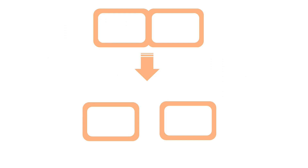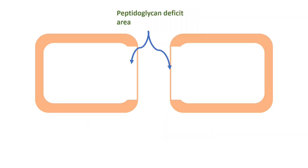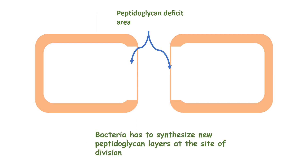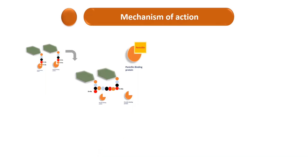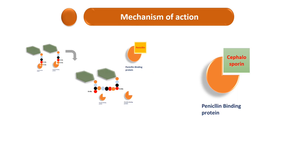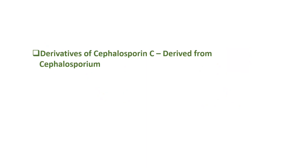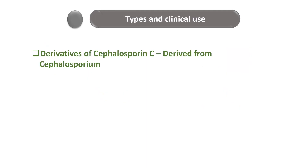During replication, a bacterium removes the peptidoglycan layer circumferentially to allow cell division by a pinching-like action, quickly placing new segments at the ends of what have become two bacteria. This process requires the transpeptidation reaction mediated by penicillin-binding proteins. Cephalosporins, like penicillin, bind to penicillin-binding proteins, thus preventing the closing of vulnerable ends on dividing bacteria. This is why beta-lactam antibiotics are bactericidal.